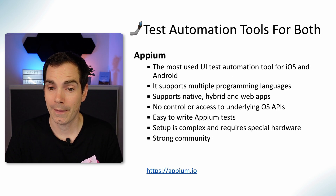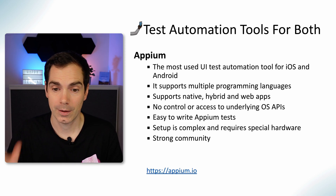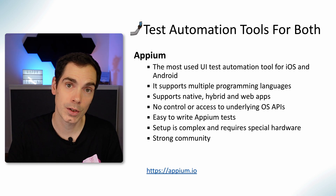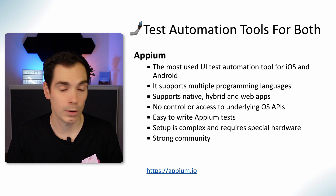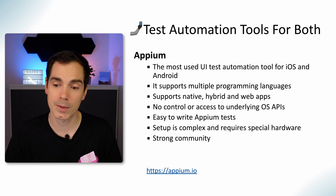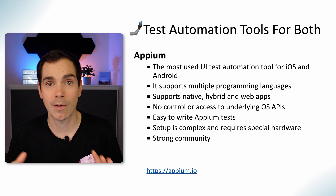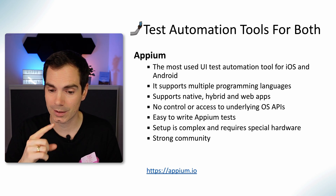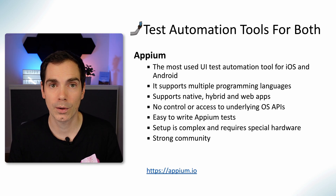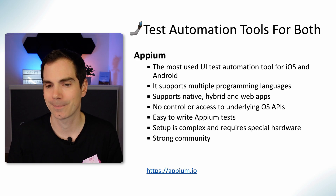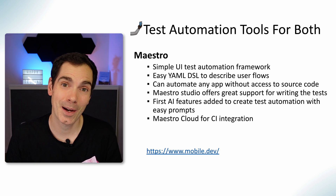Now we come to cross-platform tools — and you may have been waiting for Appium. Appium was there two years ago and it's still here. It's the most used UI test automation framework for iOS and Android, supports multiple languages, supports native, hybrid, and web apps. One drawback is no direct access to the underlying OS APIs. It's easy to write Appium tests but more complex to set up, and it has a really strong community.